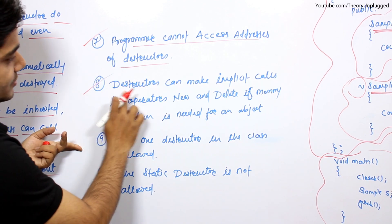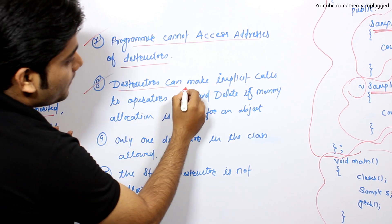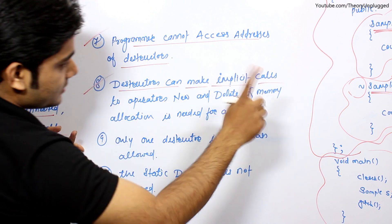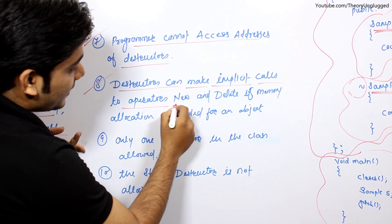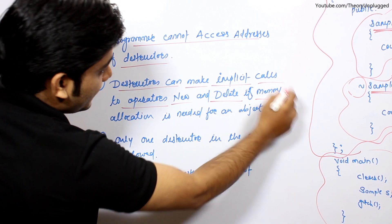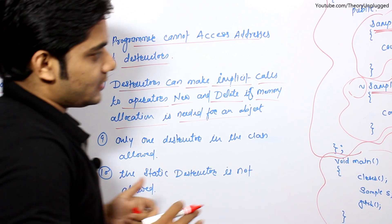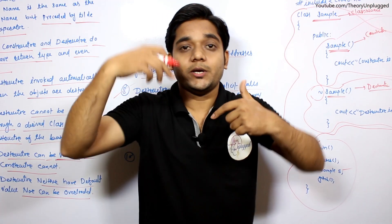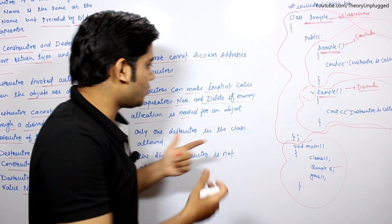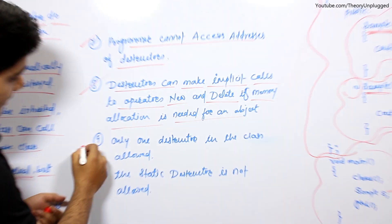Eighth point: destructor can make implicit calls when two operators new and delete are used for memory allocation for an object. If we talk about memory allocation or deallocation, at that time implicit call will happen.